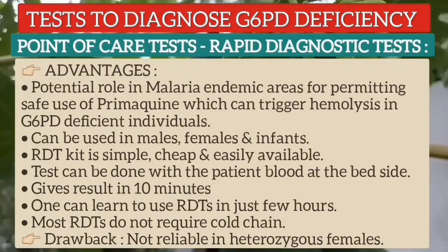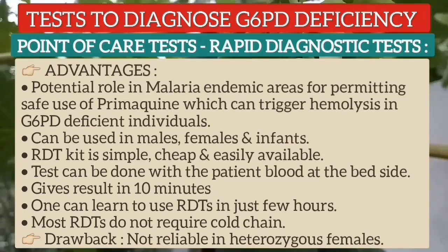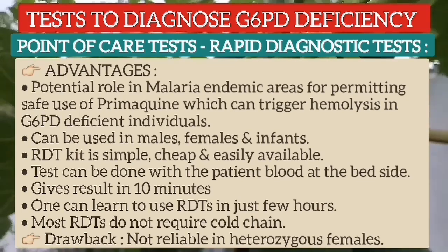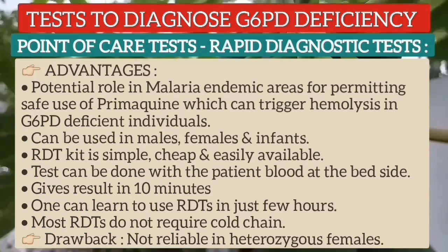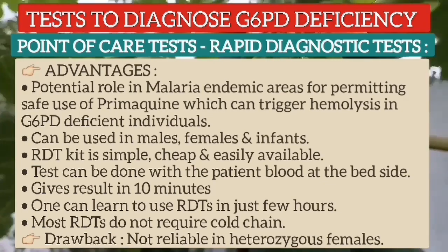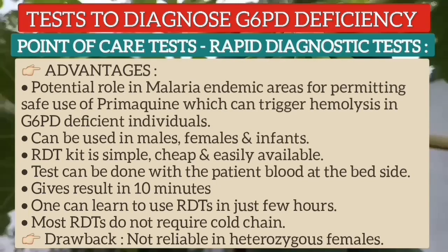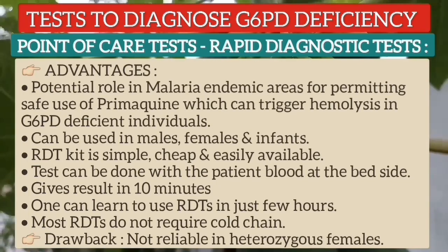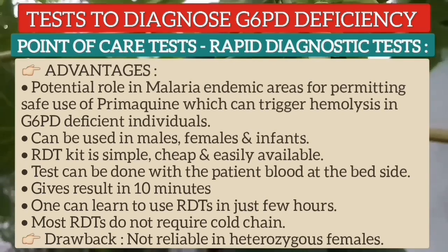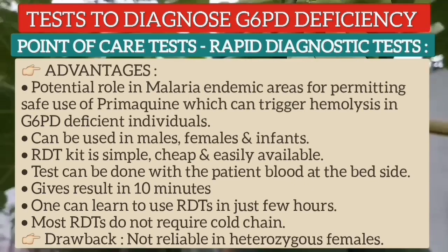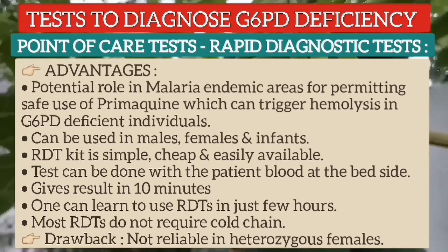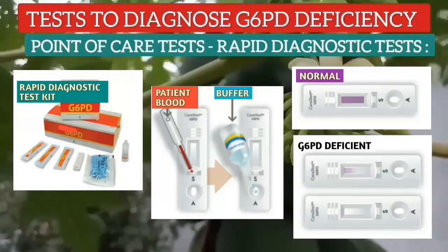A number of point-of-care rapid diagnostic tests for determining G6PD deficiency have been developed. They have a potential role in malaria-endemic areas for permitting safe use of primaquine, which can provoke hemolysis in persons with G6PD deficiency. These tests can be safely used in males, females, and infants. The kit is simple, cheap, and easily available. The test can be done with the patient's blood at the bedside and results in 10 minutes. Most rapid diagnostic tests do not require a cold chain. However, a drawback is that the test is not reliable in heterozygous females.